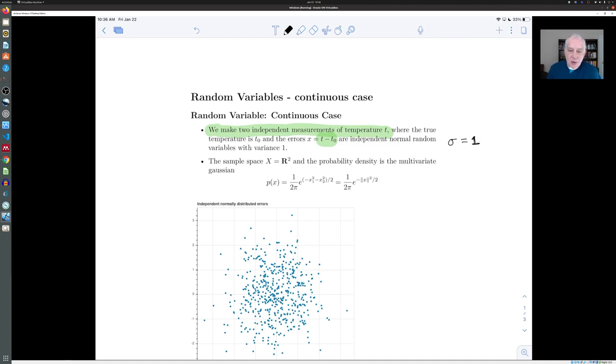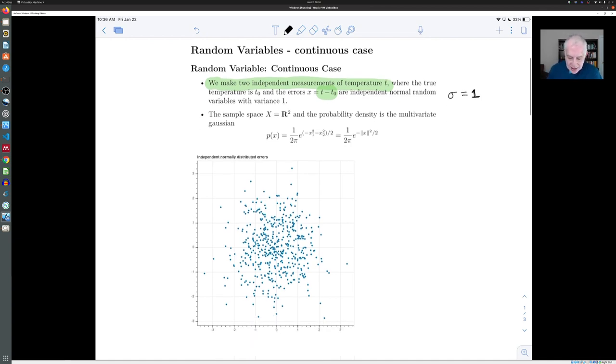And as we've seen before, since these measurements are independent, the associated probability density is the square. It's the product of the probability densities for the two independent measurements, each of which is one over square root of two pi e to the minus x squared over two.